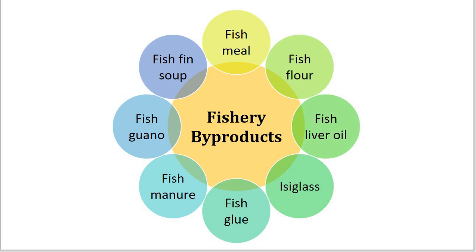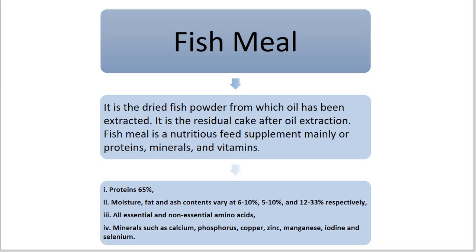There are so many fishery by-products such as fish meal, fish flour, fish liver oil, isinglass, fish glue, fish manure, fish guano, or either fish fin soup. These are the different derivatives or by-products of fishery or the fishing industry. We can discuss all these products one by one.